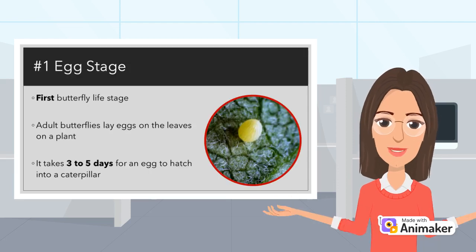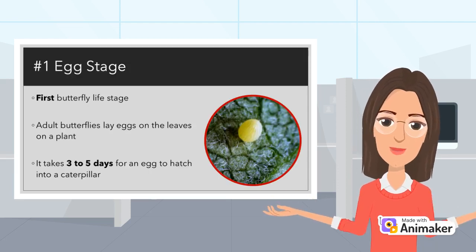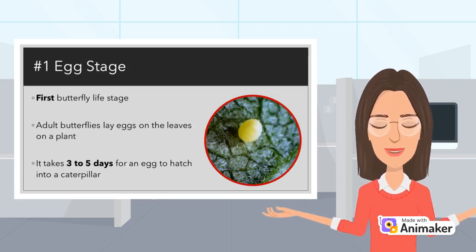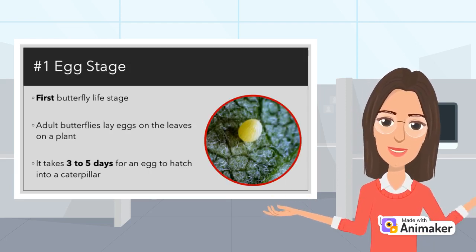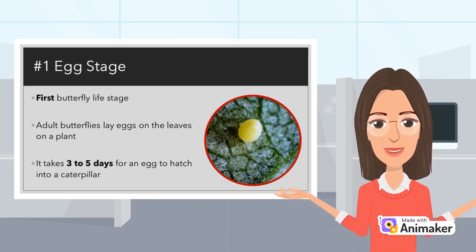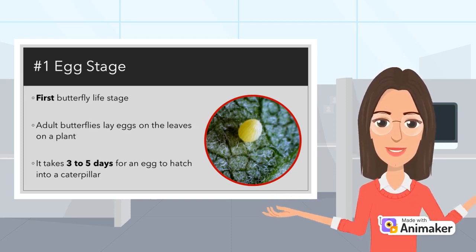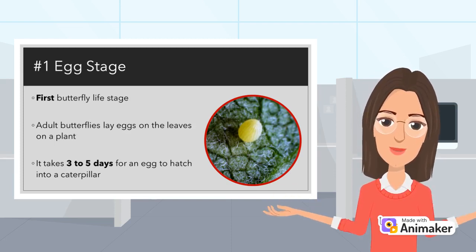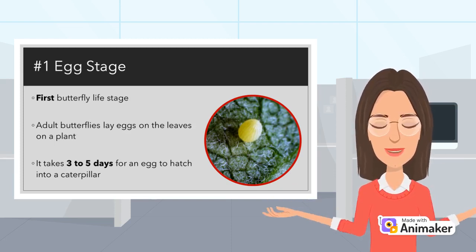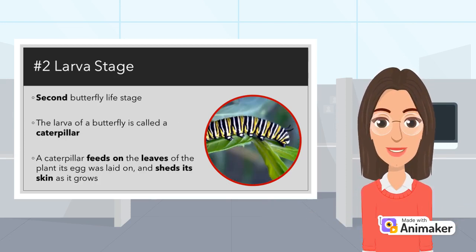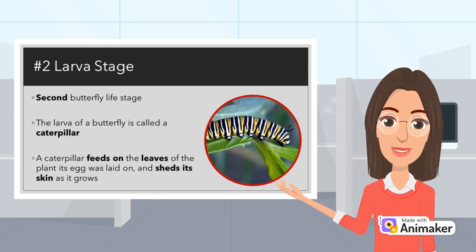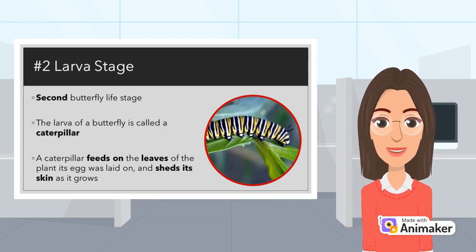The first life stage of the butterfly is the egg stage. Adult butterflies lay eggs on the leaves of a plant. It takes about three to five days for a caterpillar to hatch out of the egg. When this happens, the butterfly enters its second life stage, the larva stage.